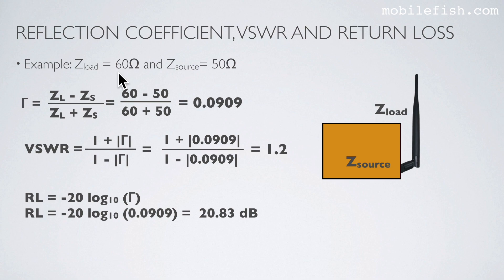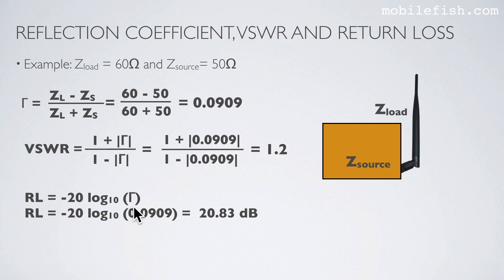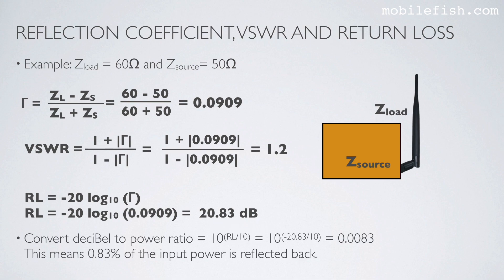Here is an example. Let's assume the load impedance is 60 ohms, for example the gateway, and the source impedance is 50 ohms, that is the antenna impedance. If you put these two values in the formula, you will get a reflection coefficient of 0.0909. The VSWR will be 1.2. The return loss will be 20.83 decibels. To convert that to a power ratio, enter the return loss as a negative value — the power ratio will be 0.0083, meaning 0.83% of the input power is reflected back.